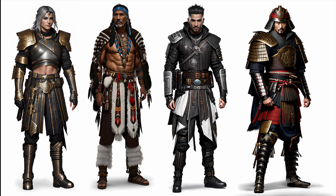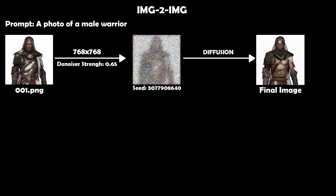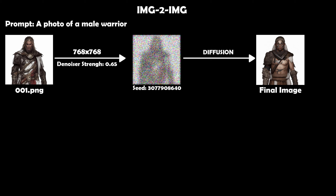That's why we're going to emphasize specifically on the other really powerful feature from Automatic1111's web UI — and that's image-to-image. This method will allow us to achieve much more consistent results and similar appeal and look for all of our designs. Let's look at how image-to-image works. We use a simple prompt 'a photo of a male warrior,' load our image, predefine our resolution, and then set our denoiser strength — in my case I'm going to set it to 0.65.